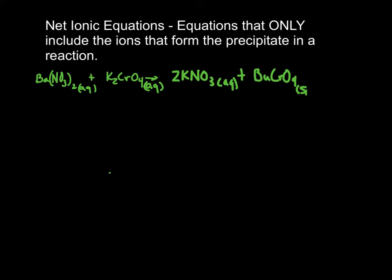One additional thing that we need to be able to do with precipitate reactions is to write a net ionic equation. Please copy down the definition, and then we're going to take a look at our first example.